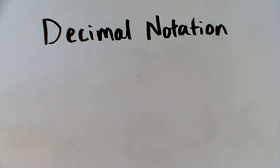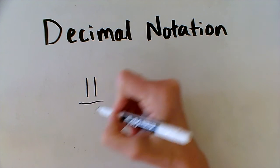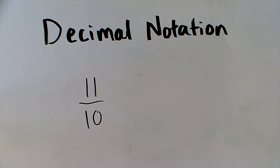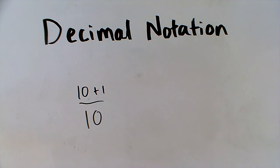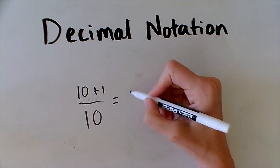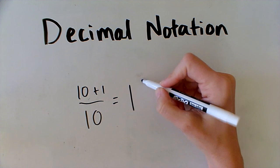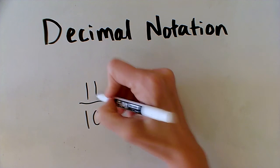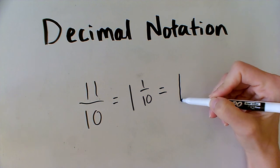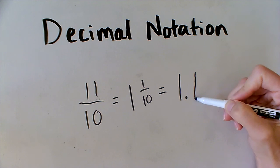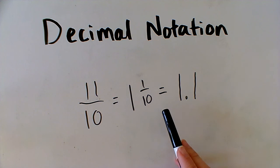Let's look at a really tricky one. This time I have eleven tenths. This is actually an improper fraction because the numerator is larger than the denominator, which means I do have a whole number hiding in this fraction. If I think about eleven tenths, I can think about the eleven as ten plus one — so really this is ten tenths plus one tenth. Ten tenths is just one, so this is one and one tenth. Eleven tenths is just one and one tenth. I have a one in the ones place and a one in the tenths place — written as 1.1.